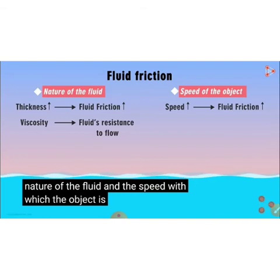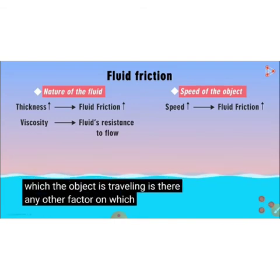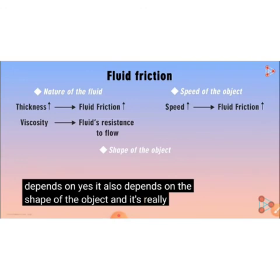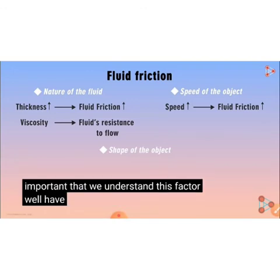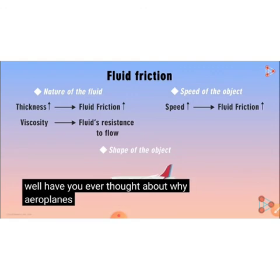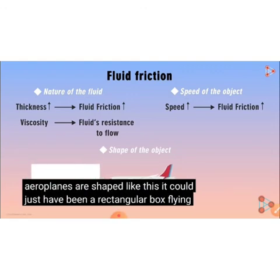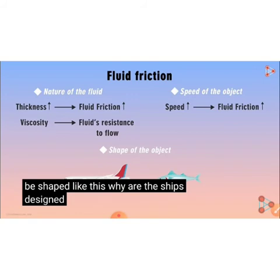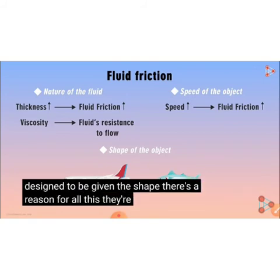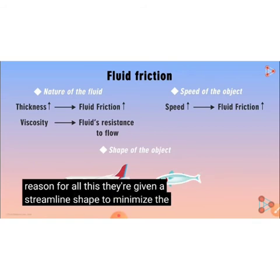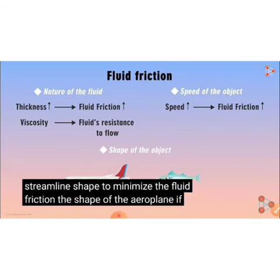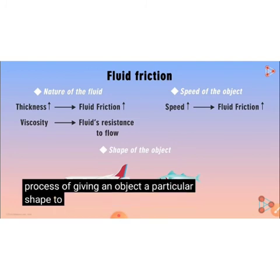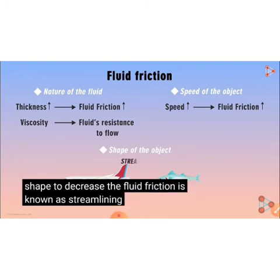Apart from the nature of the fluid and the speed of the object, fluid friction also depends on the shape of the object. Have you ever thought about why aeroplanes are shaped the way they are? Could they have just been a rectangular box flying in the air? How have fish evolved to be shaped the way they are? Why are ships designed with a particular shape? They are all given a streamlined shape to minimize fluid friction. This process of giving an object a particular shape to decrease fluid friction is known as streamlining.